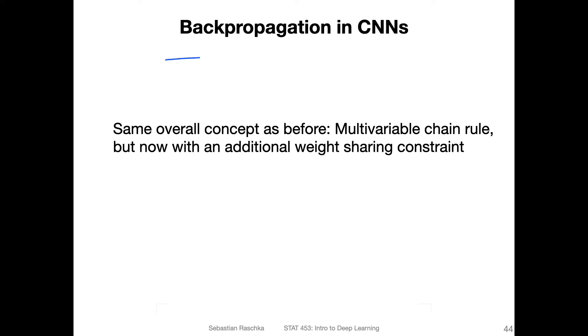So how does backpropagation work in CNNs? That's essentially the same concept we used before in the context of multi-layer perceptrons, but here we are applying the multivariable chain rule because we have these weight sharing constraints, where we apply the same weight to different regions in the image.